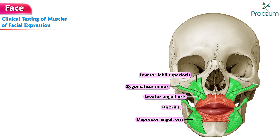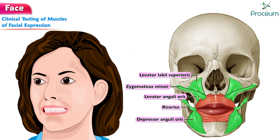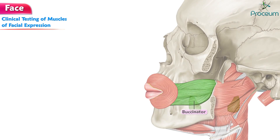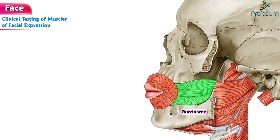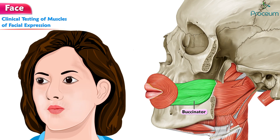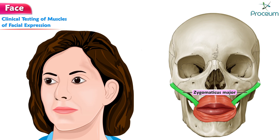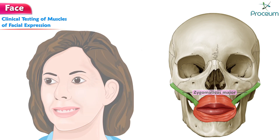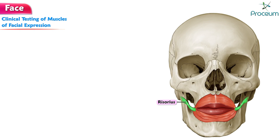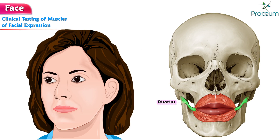Dilators of the mouth: ask the patient to show his teeth. Buccinator: ask the patient to puff the mouth and then blow out the air forcefully. Zygomaticus major: ask the patient to laugh. Risorius: ask the patient to smile gently.